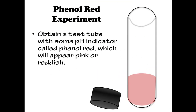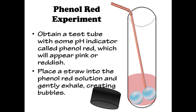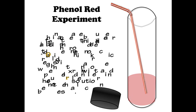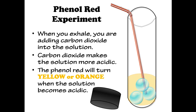For this experiment, you will obtain a test tube with some pH indicator called phenol red, which will appear pink or reddish. Then place a straw into the phenol red solution and gently exhale, creating bubbles. When you exhale, you are adding carbon dioxide into the solution. Carbon dioxide makes the solution more acidic, and the phenol red will turn yellow when the solution becomes acidic.